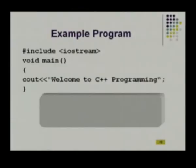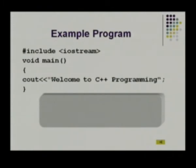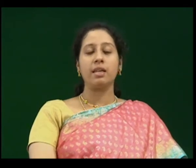Here is an example program. We have #include iostream.h, which is the header file — in C we had stdio.h, here we have iostream.h. Void main is the function where the program starts. You have the cout function, which is the output function in C++, somewhat similar to the printf statement in C. Here we are printing 'welcome to C++ programming' and closing the function. This is the simplest form of a C++ program without any classes — instead of printf you use cout, and instead of stdio.h you use iostream.h.